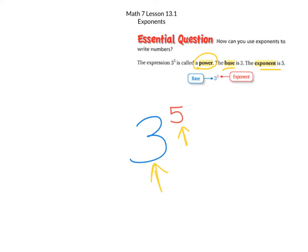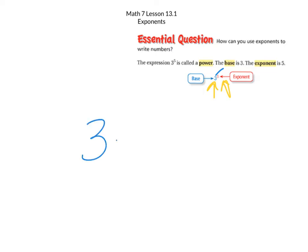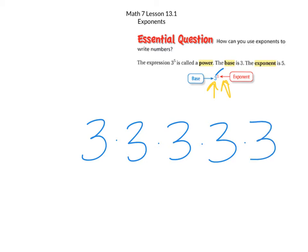Let me show you another way to look at this. If I have the base as 3 and the exponent as 5, all that's telling me is I'm taking the 3 times itself the number of times that I have for an exponent. So this would be 3 times itself 5 times — that's the math you would actually do: 3 times 3 times 3 times 3. But instead of writing it out like this, which takes forever, you just say 3 to the power of 5.